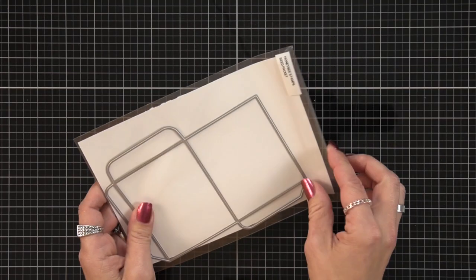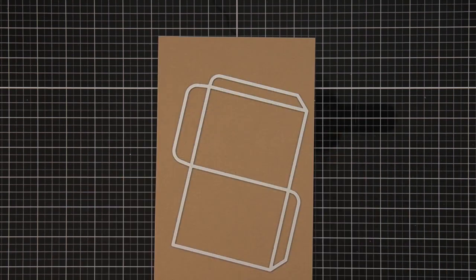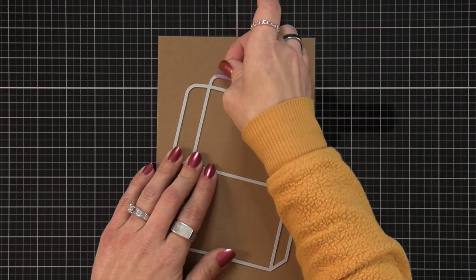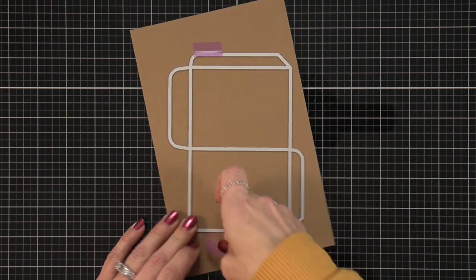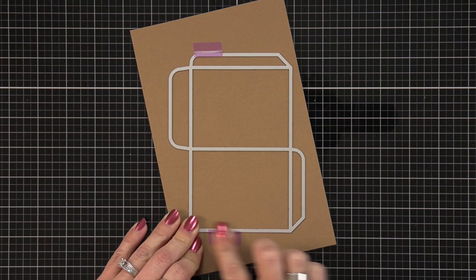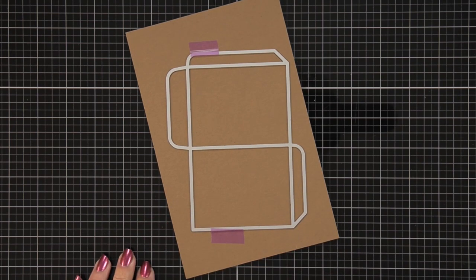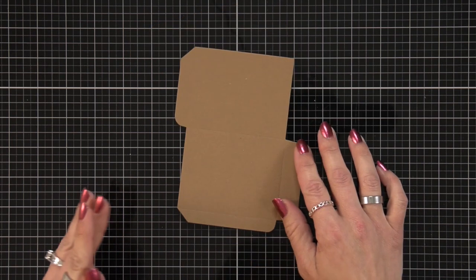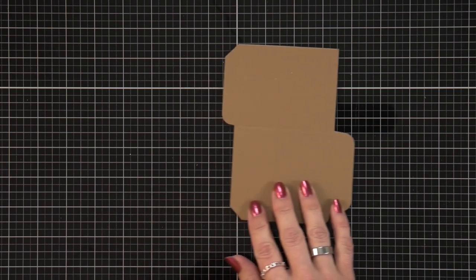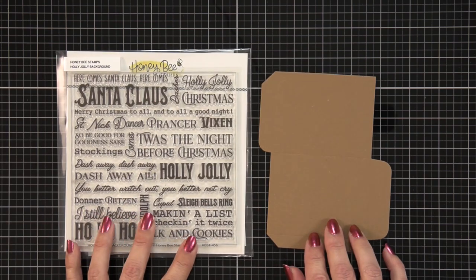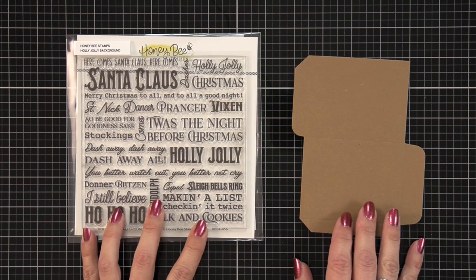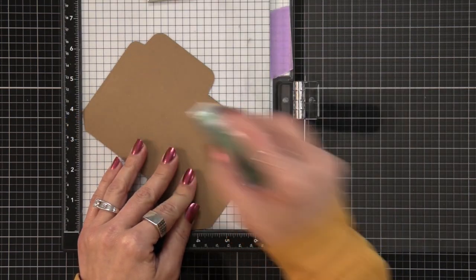Now I am going to be creating this gift card holder using the seed packet die and I am going to be die cutting this out of some paper bag cardstock. I'm holding that in place with some ECC tape and running that through my die cut machine. I wanted to have this rustic look to my front of the gift card holder and I'm also going to be stamping a background.